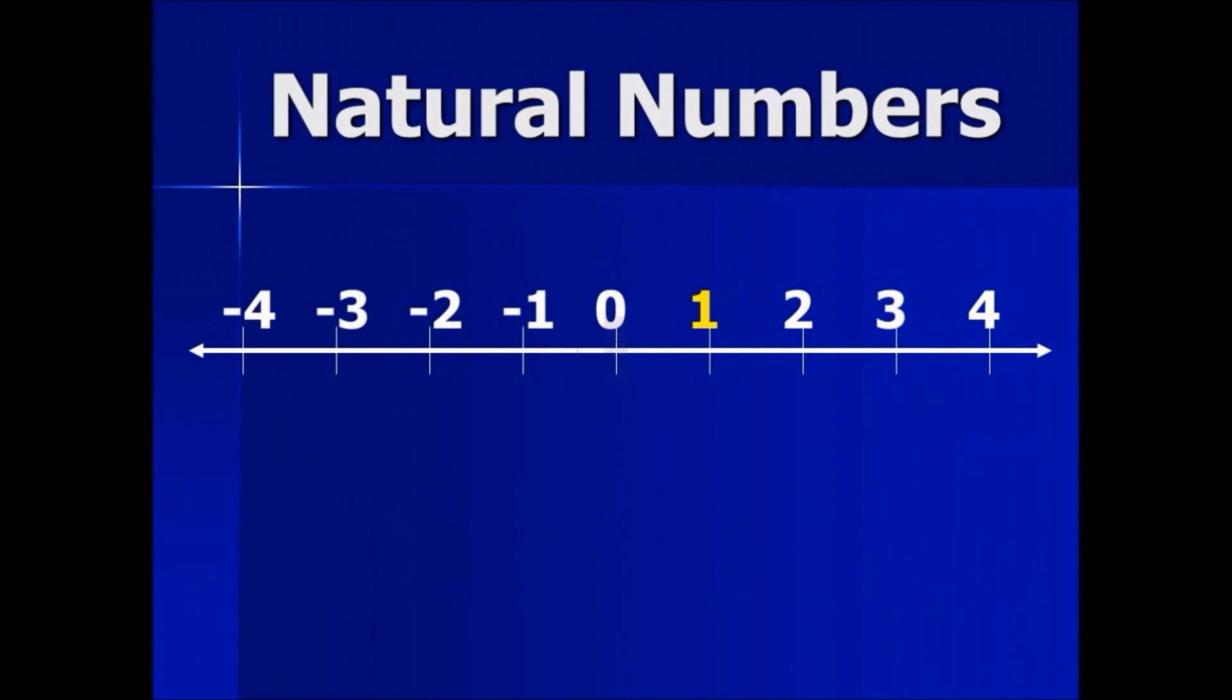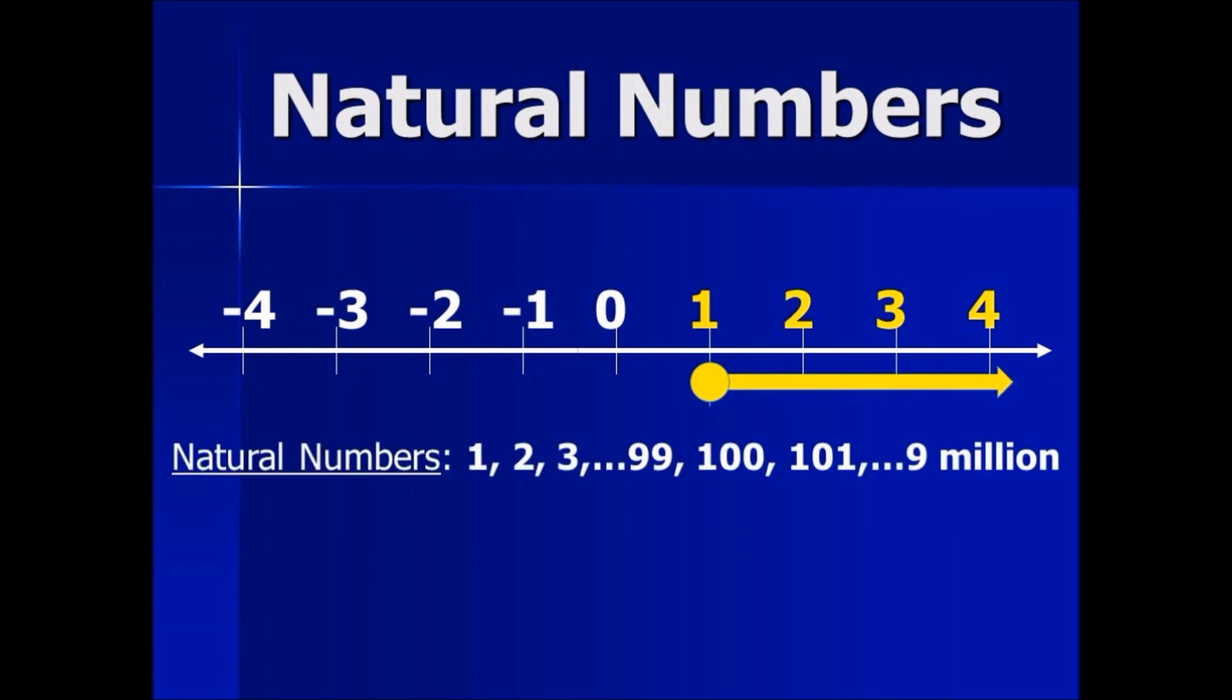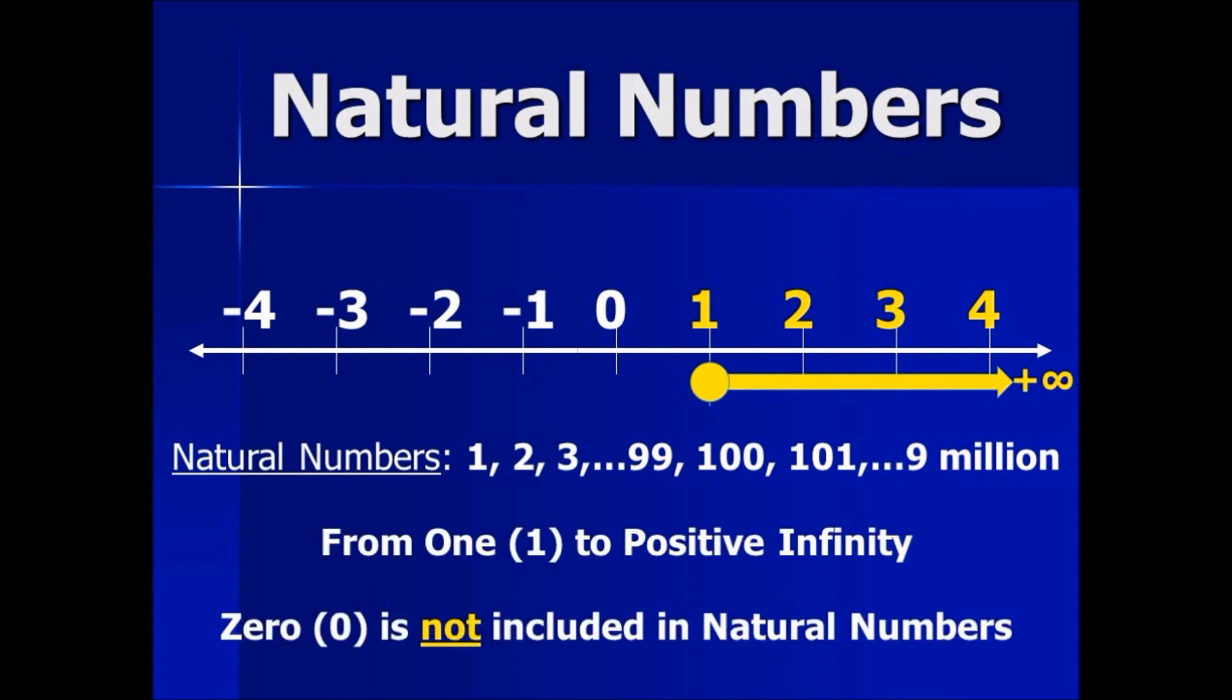Natural numbers begin at the number 1, contains all the complete positive numbers along the number line: 1, 2, 3, 99, 100, 101, 9 million, all the way up to positive infinity. Zero is not included.